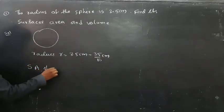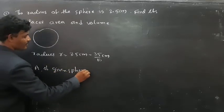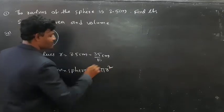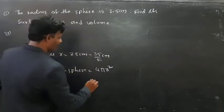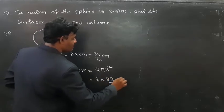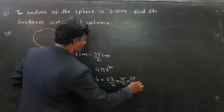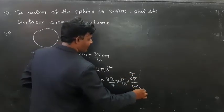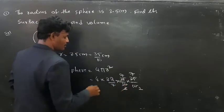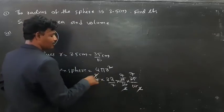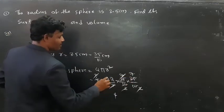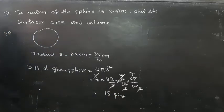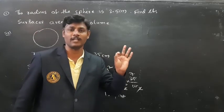Surface area of the given sphere equals 4πr². Using 4 × (22/7) × (35/10) × (35/10), we cancel the 7s and 2s in the calculation. The result gives us 22 × 7 = 154. So the surface area of the given sphere is 154 cm².